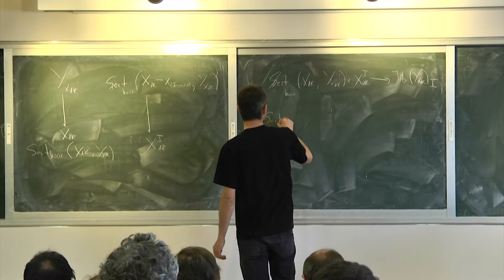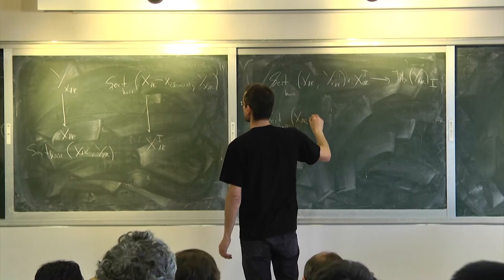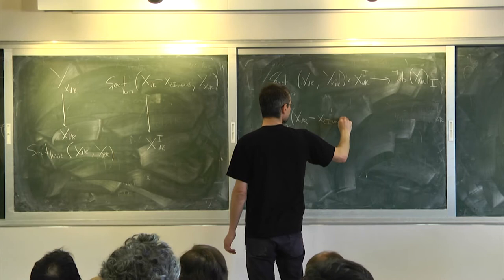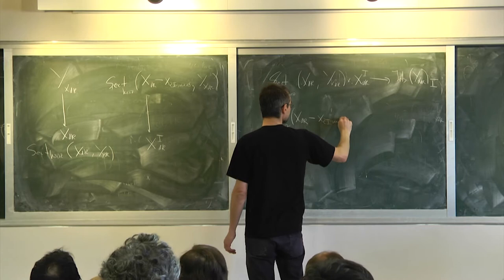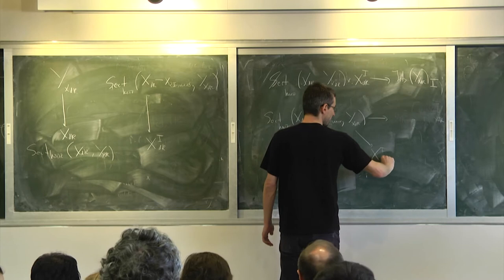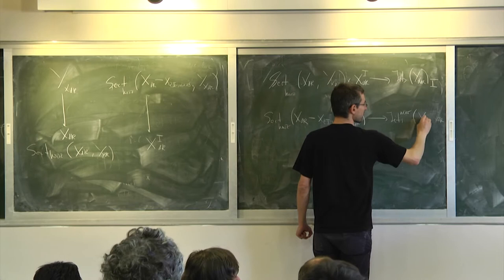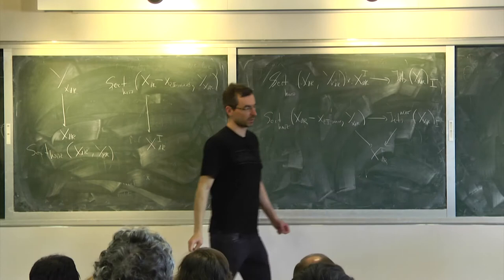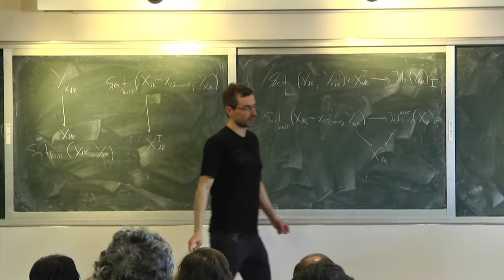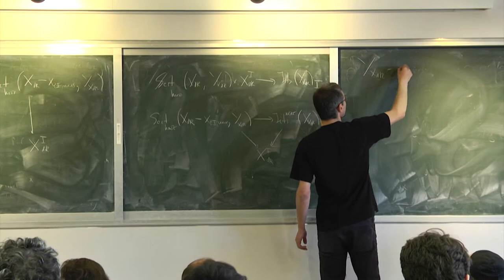Similarly, you have maps of this type: you take sections horizontal, as we just said, on X dR minus the universal point, and that will have a map which lives over X_i dR, with an evaluation mapping into jets Y X dR, i. Now we're going to apply this to Y X dR being our D-scheme of opers.